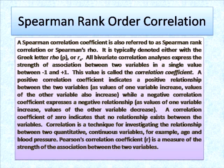Spearman rank order correlation is a non-parametric statistical technique used for qualitative studies. The Spearman correlation coefficient is typically denoted with R. All bivariate correlation analysis expresses the degree and strength of association between two or more variables in a single value between minus one and plus one, called the correlation coefficient. A positive coefficient indicates a positive relationship where both variables increase together, while a negative coefficient indicates an inverse relationship. A correlation coefficient of zero indicates no relationship between two variables.